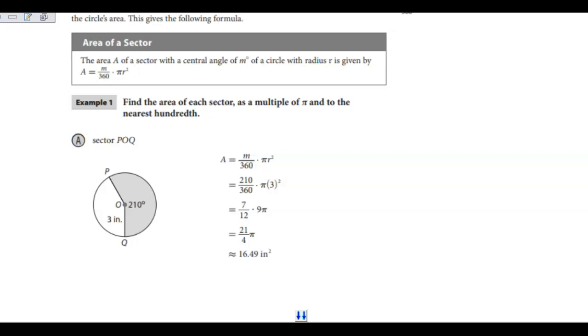In A, we're looking at sector POQ. In circle O, I notice I have this grayed out section that's 210 degrees, so that's my m. I see that I have a radius of 3 inches, and I'm going to use this information to find the area.